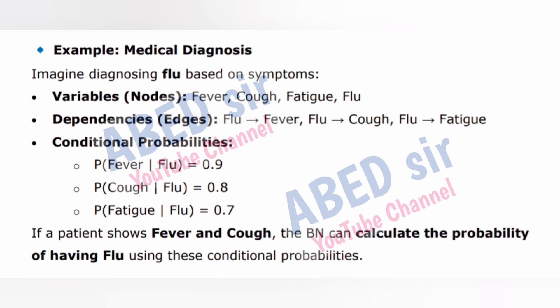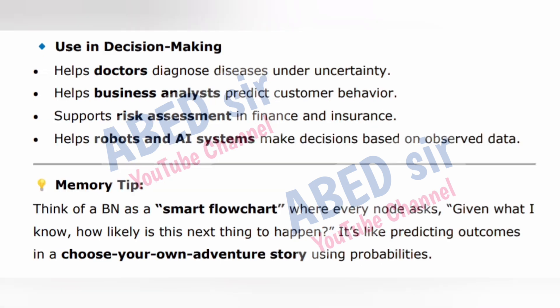Example: Medical diagnosis. Imagine diagnosing flu based on symptoms. Variable nodes: fever, cough, fatigue, flu. Dependencies (edges): flu→fever, flu→cough, flu→fatigue. Conditional probabilities: P(Fever | Flu) = 0.9, P(Cough | Flu) = 0.8, P(Fatigue | Flu) = 0.7. If a patient shows fever and cough, the Bayesian network can calculate the probability of having flu using these conditional probabilities.